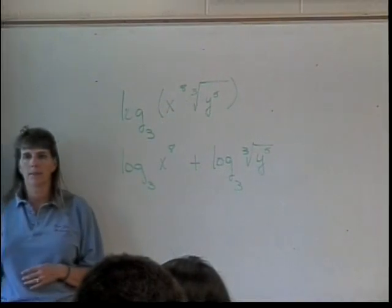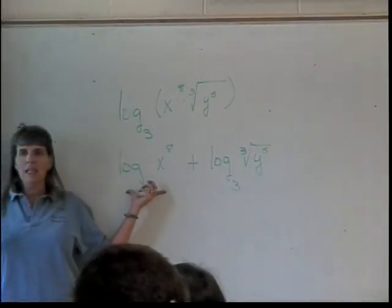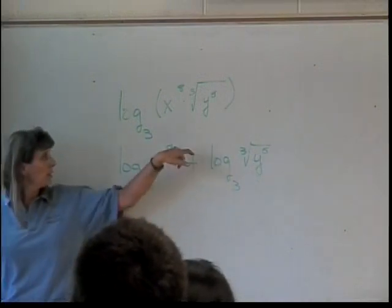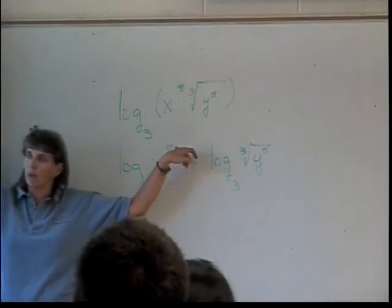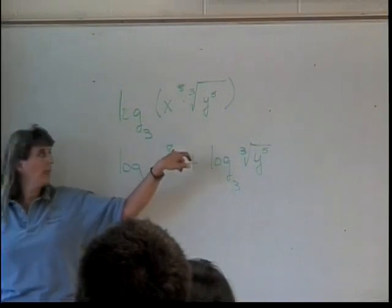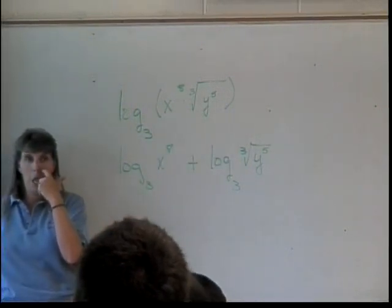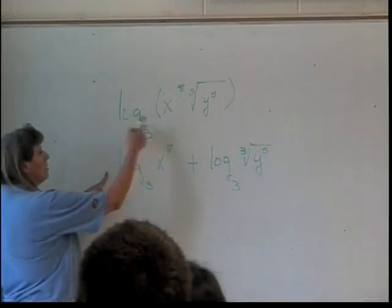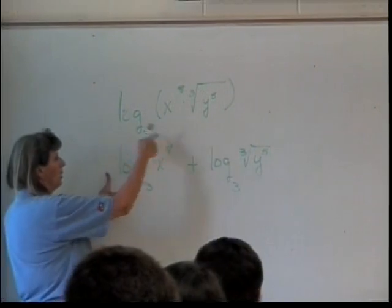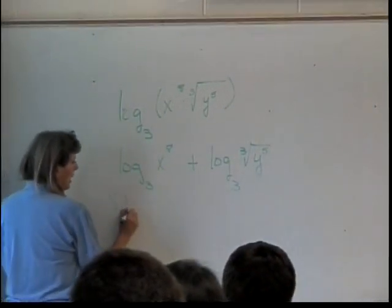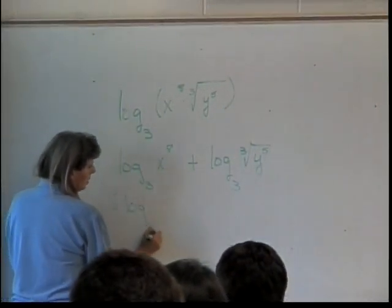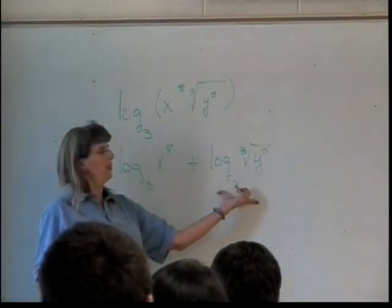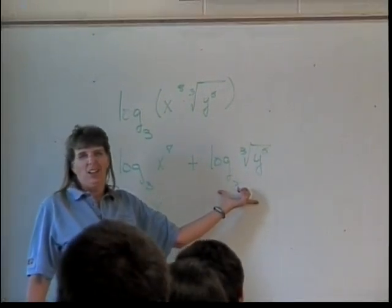All right. So far, so good. Am I done with this piece? Why not? Because I still have an exponent, and I'm supposed to have no powers. So what can I do with this power? Stick it out front. The power rule allows me to take my power and put it out front. So that becomes 8 log base 3 of X. What about this piece? Am I done with it? No.